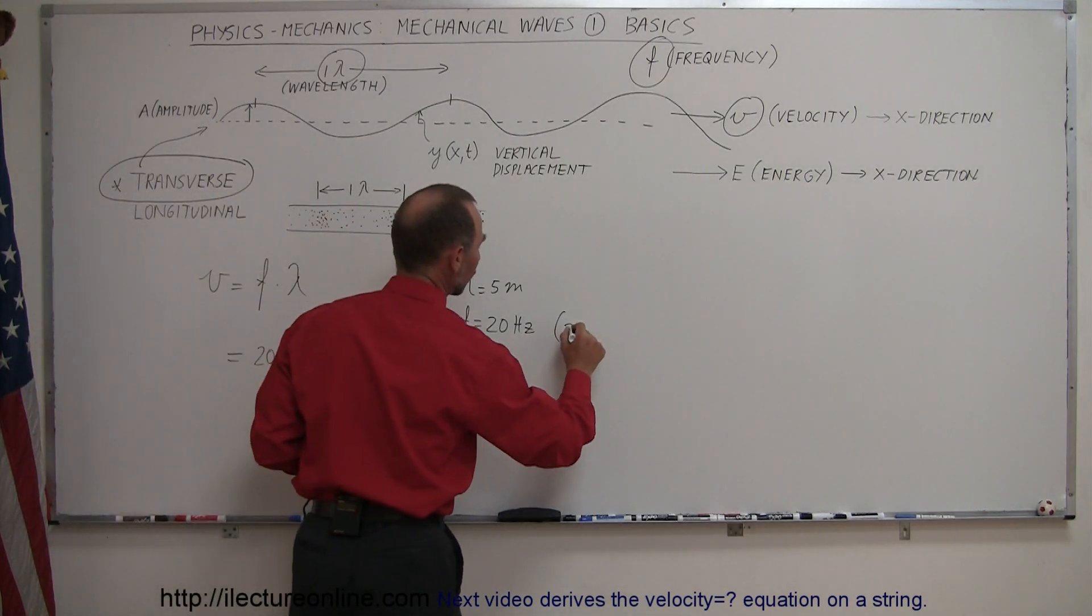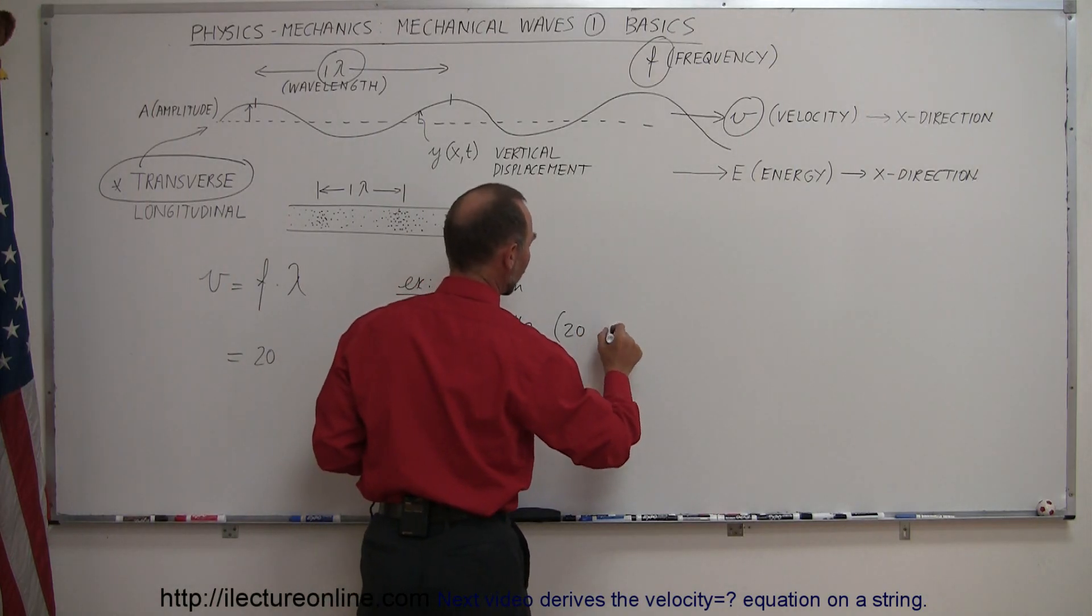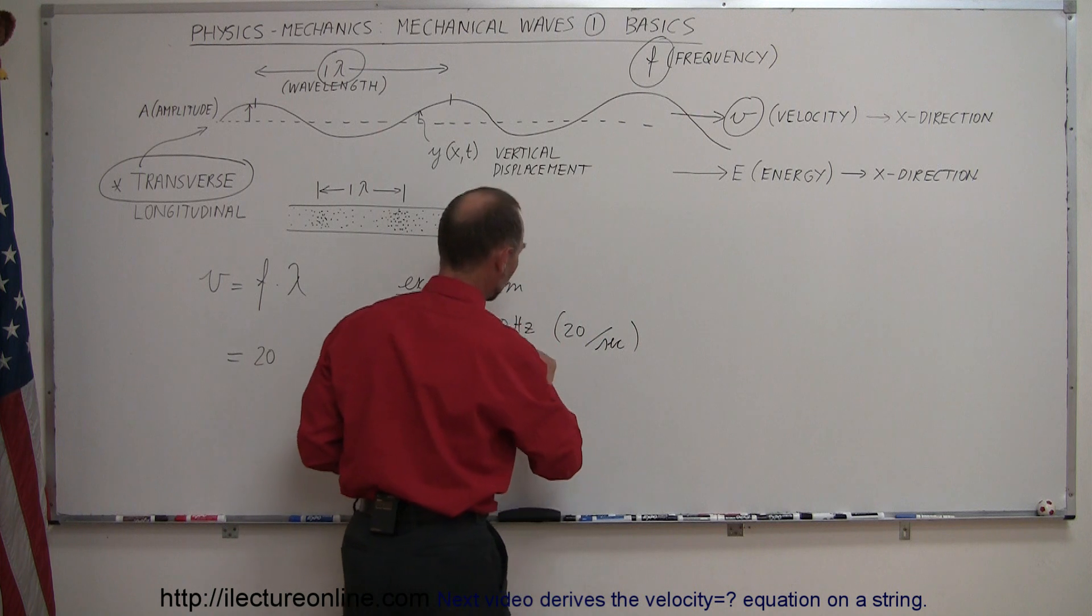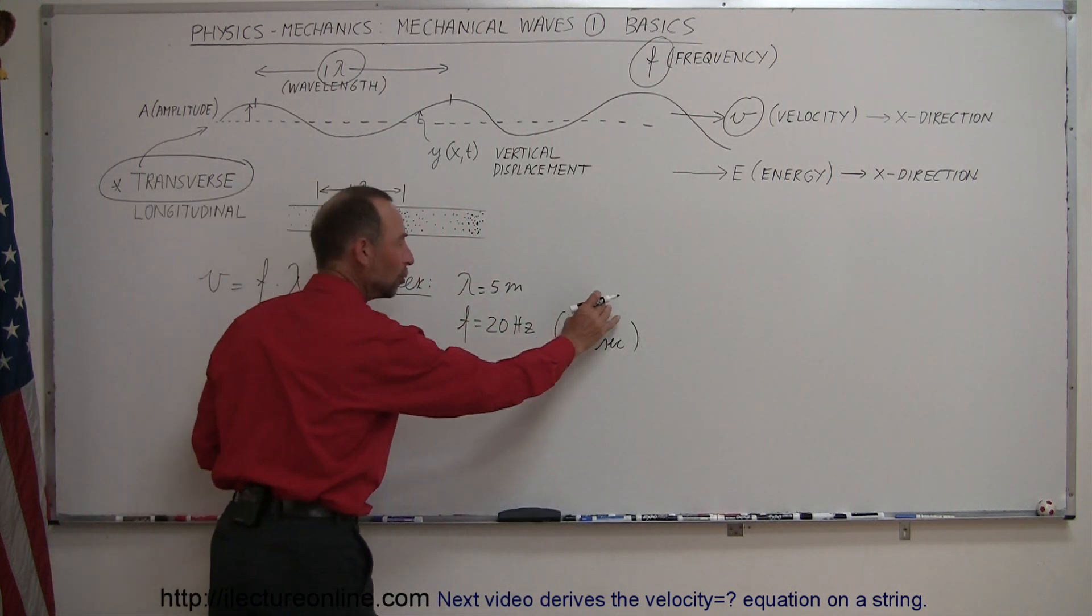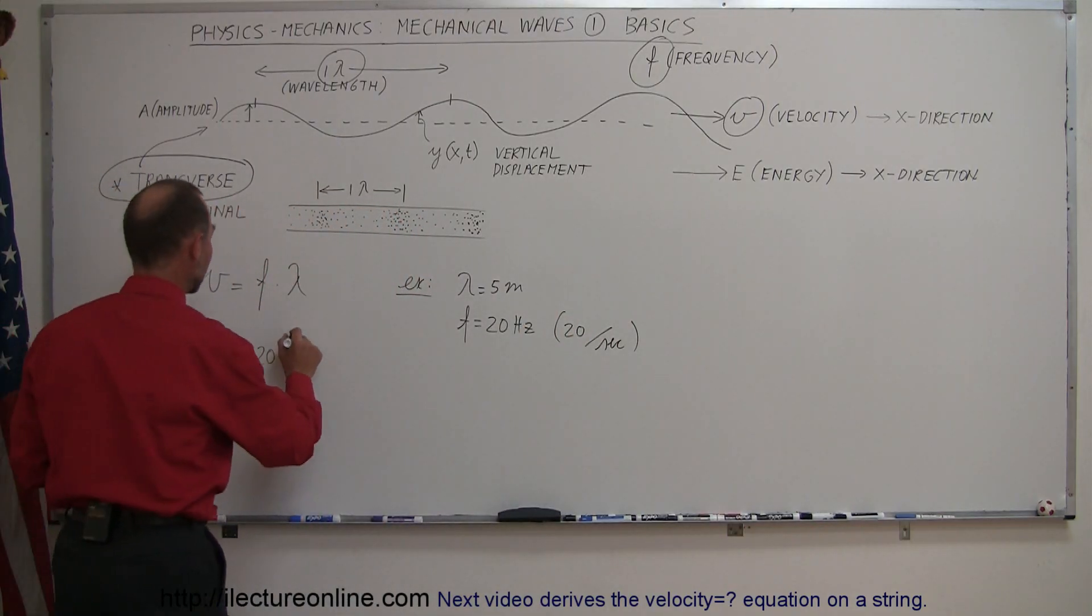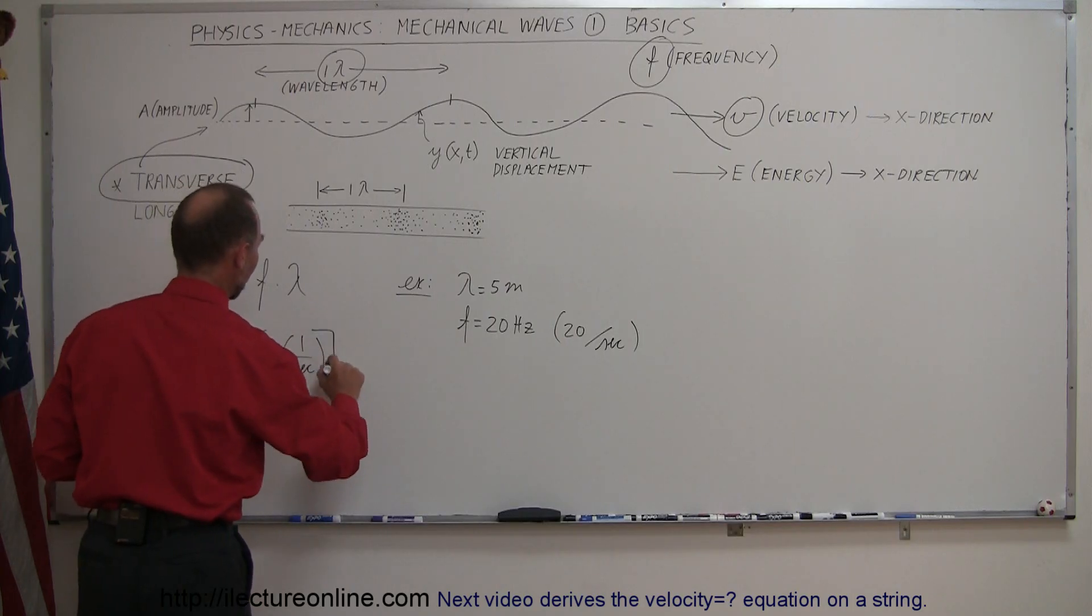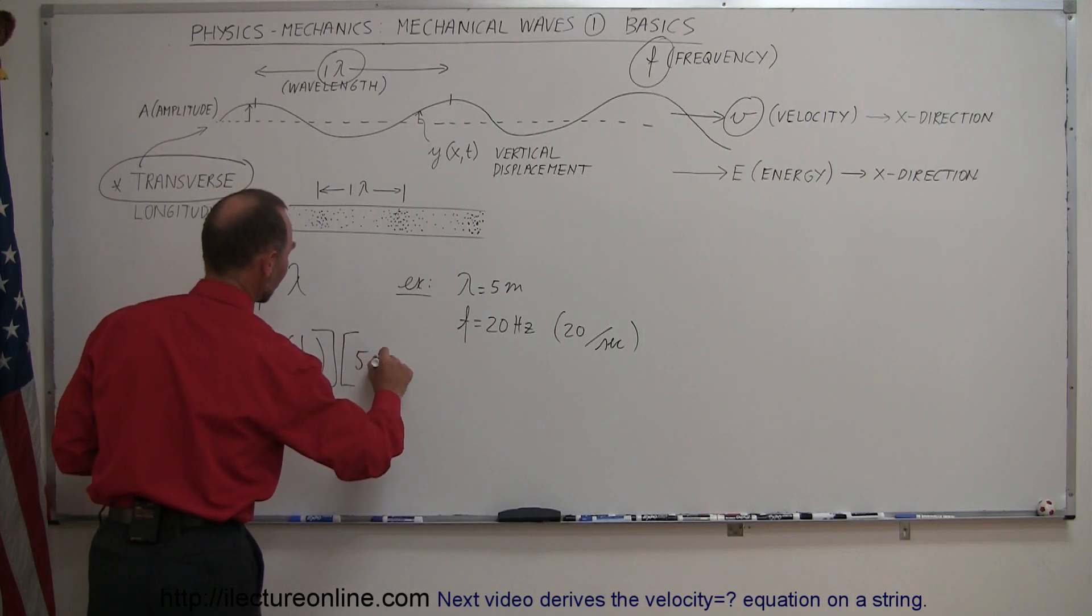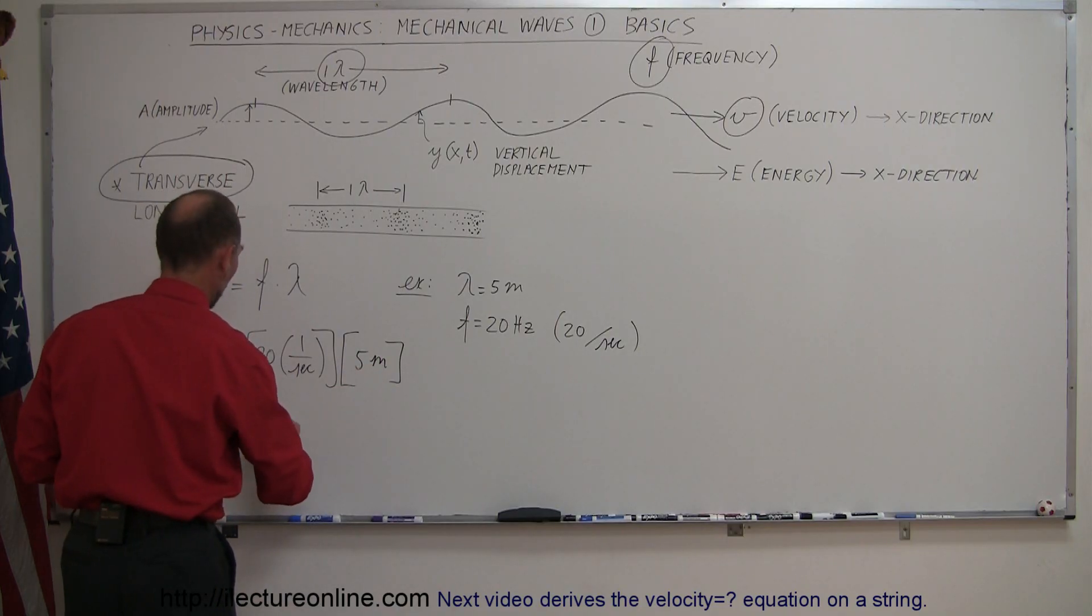Which is actually 20 cycles or oscillations per second. So the term hertz is so many times per second, so there's no unit in the numerator, but there's a unit in the denominator meaning seconds, so there's 20 times 1 over seconds, that's the frequency, multiplied times the wavelength of 5 meters. Notice units then are meters per second, and so this would be 100 meters per second.